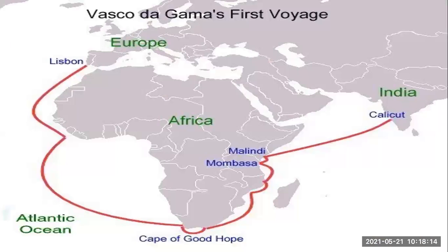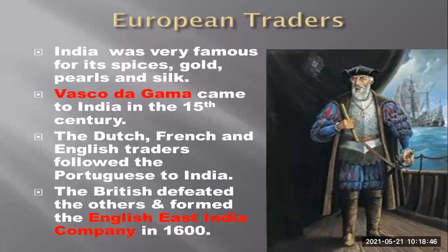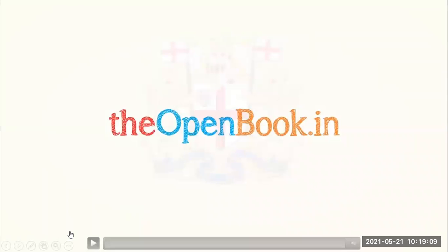We started this chapter learning about Vasco da Gama and how he introduced the sea route for having a trade relationship with India. India was very famous for its spices, pearls, silk, and gold. Every country wanted to have a trading relationship with India, and that is why he introduced the sea route.